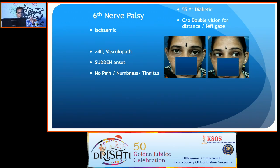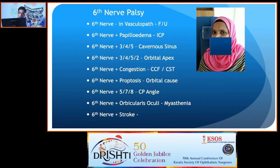In sixth nerve palsy, maximum deficit is typically at onset or within 24 hours — if it's gradually worsening over days, it is not ischemic. In a vascular palsy, look for anything additional: papilledema, other cranial nerve involvement, or congestion should prompt consideration of other causes. A patient with a subtle left sixth nerve palsy and a history of scooter accident — the scar on the forehead provided the clue: this was a carotico-cavernous fistula. There was conjunctival congestion and the eye did not move laterally, confirmed by the trauma history and vascular examination.